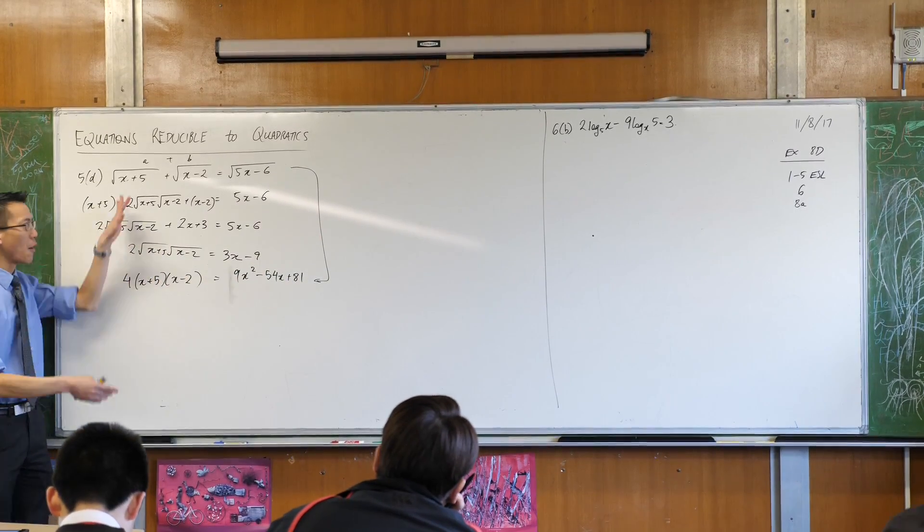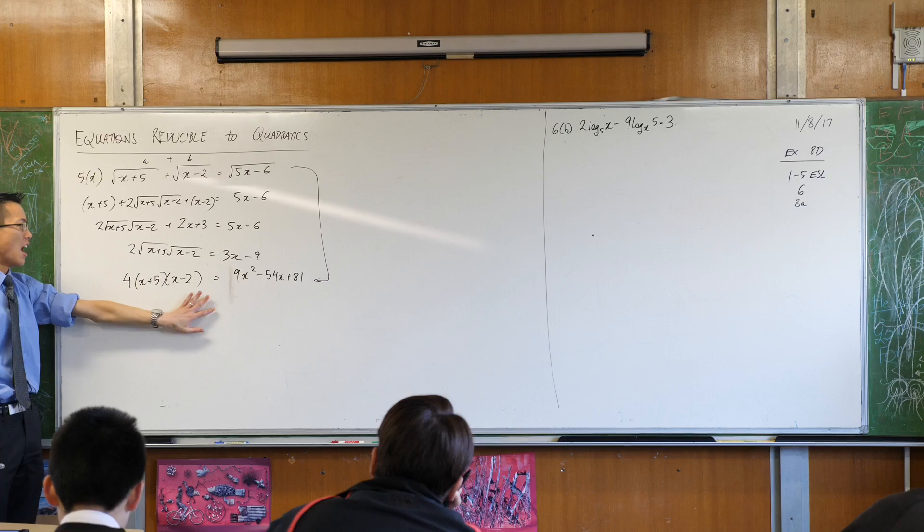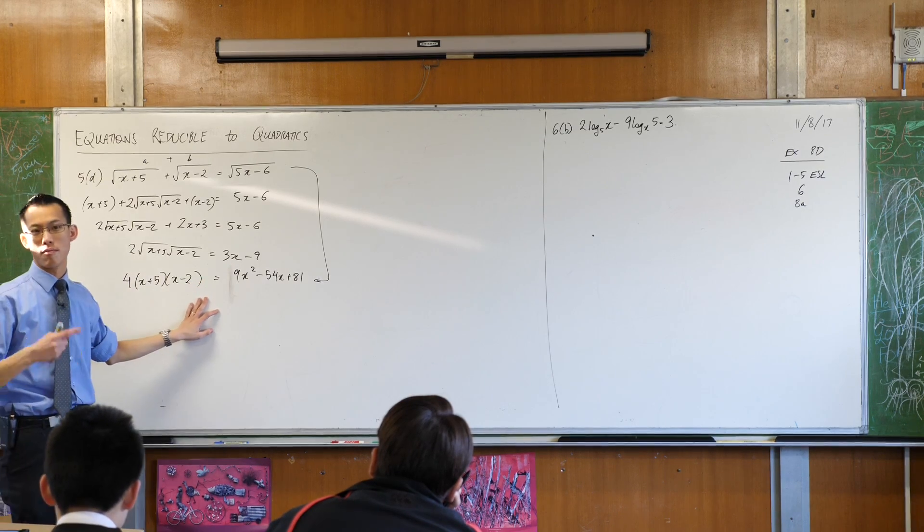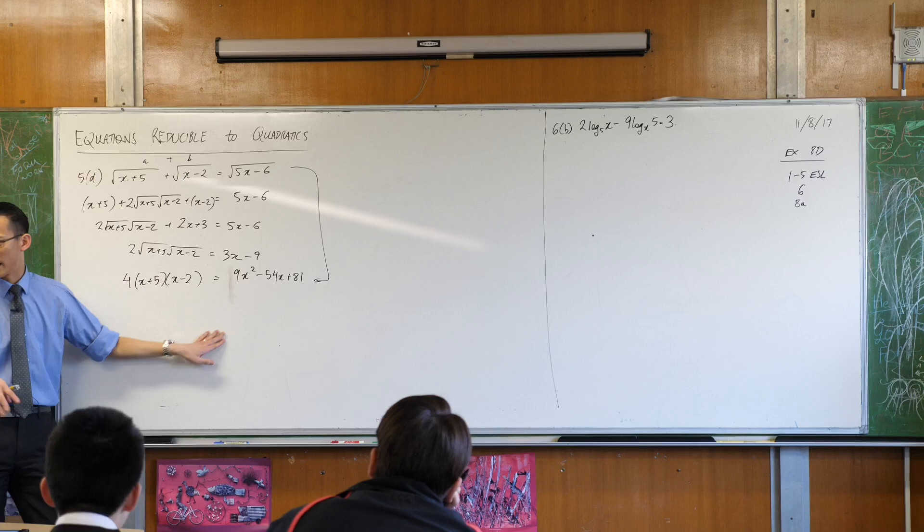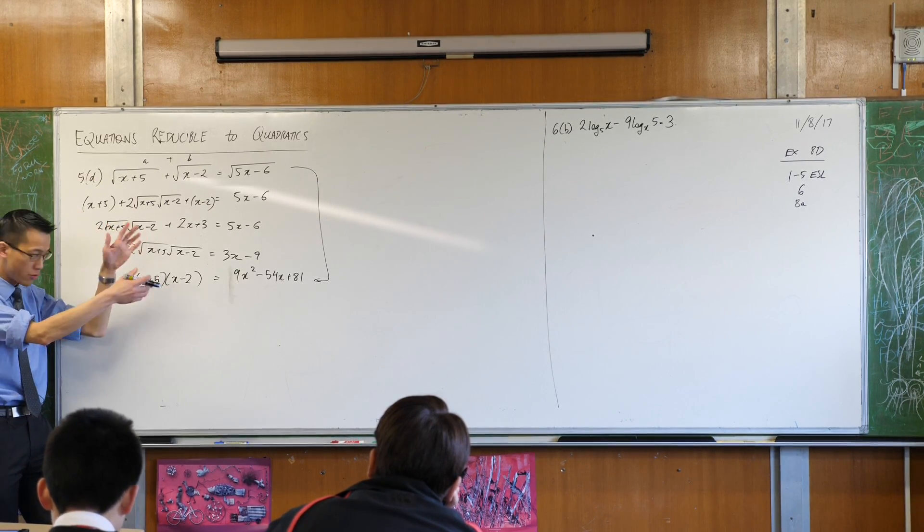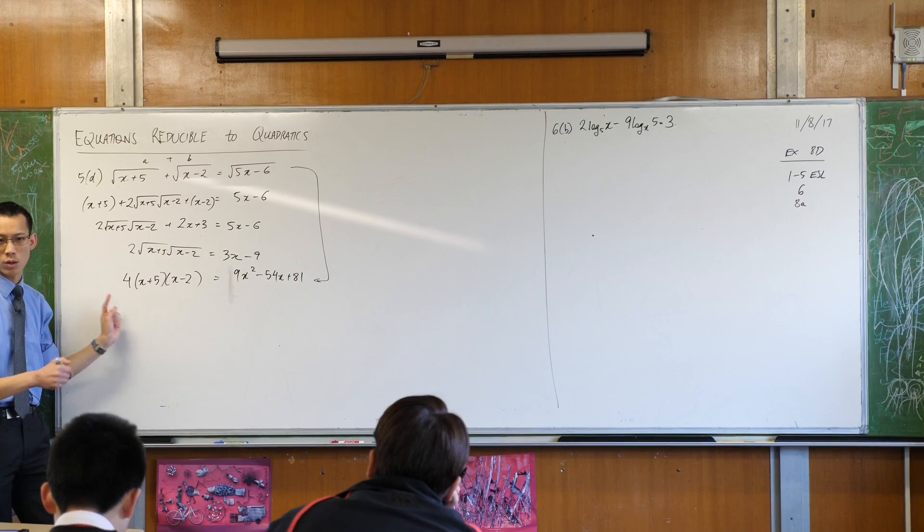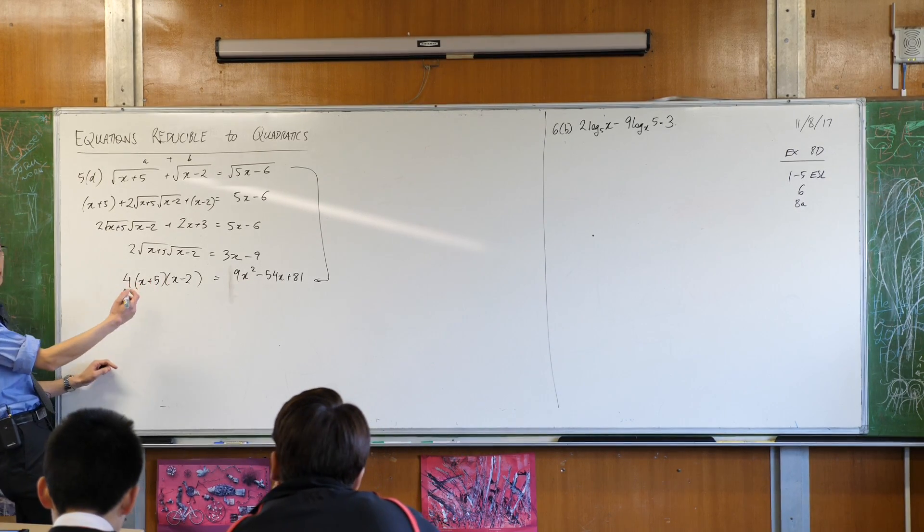Now you can see we reduced the problem from something confusing into a problem we're very comfortable with. You've got some algebraic crunching here to do - expand this, get another non-monic messy quadratic, eventually you'll have a quadratic that equals zero. It's got like 5x² something...